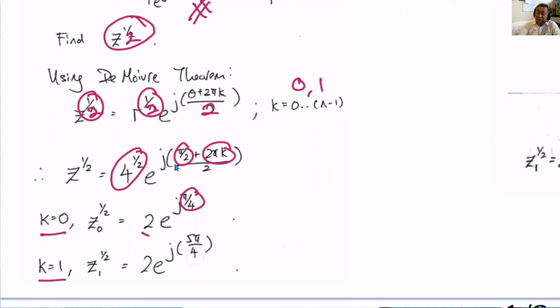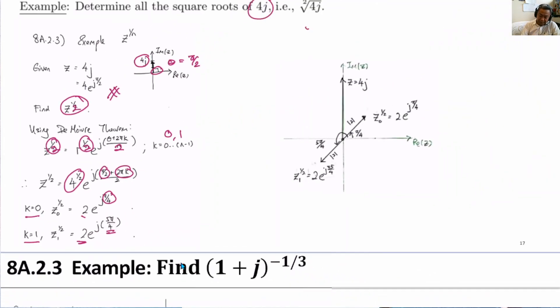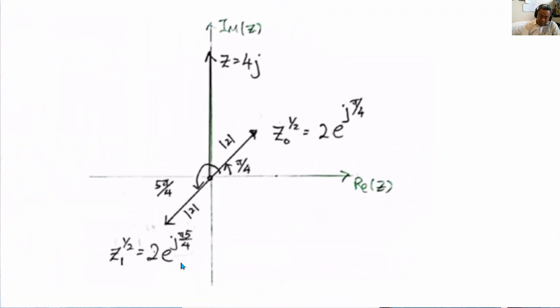The second solution is π/2 plus 2π, because k is 1 and therefore it becomes π/2 plus 2π. Then we have 2π plus π/2 is 5π divided by 4. This is the angle. We now sketch. This is the first solution. Modulus is 2, angle is π/4. The second solution is also modulus 2, angle is 5π divided by 4.